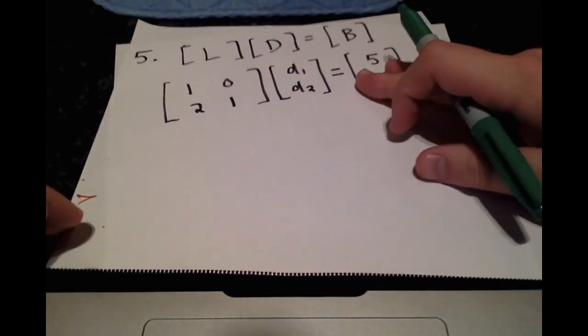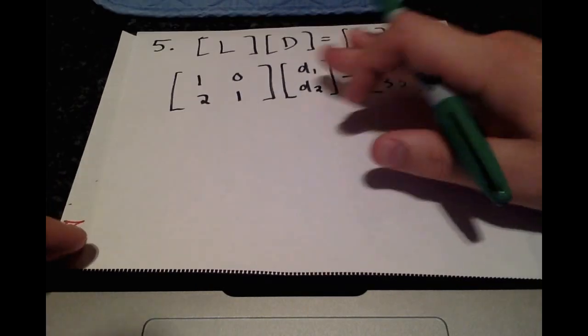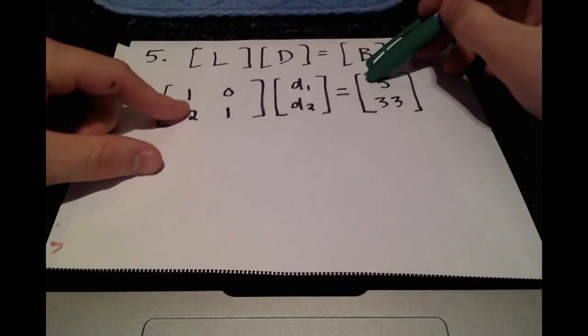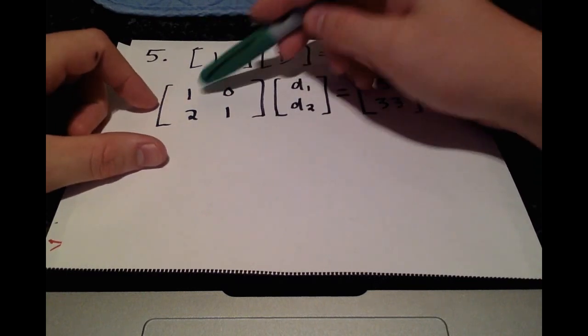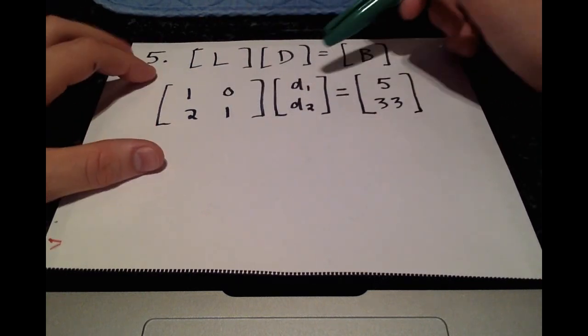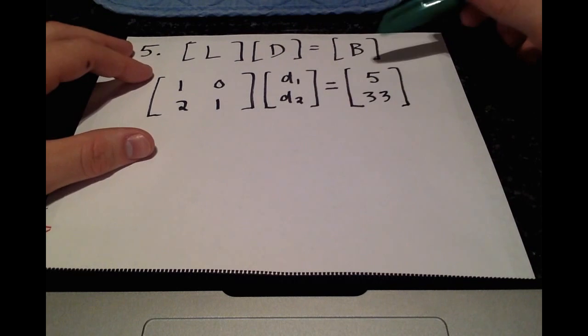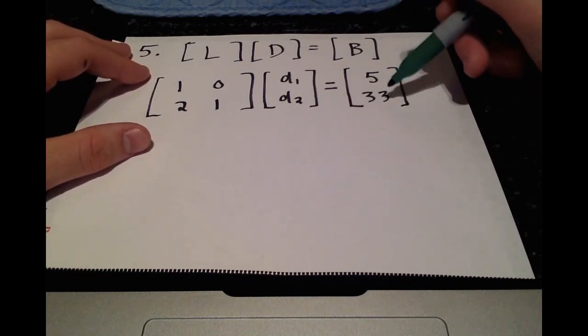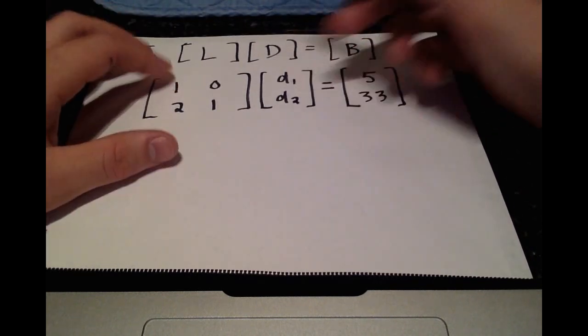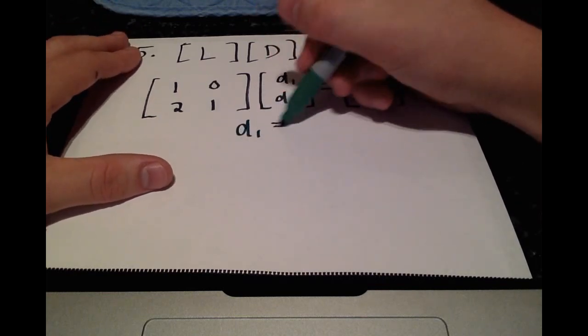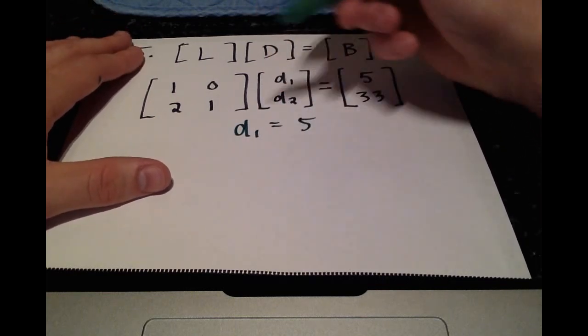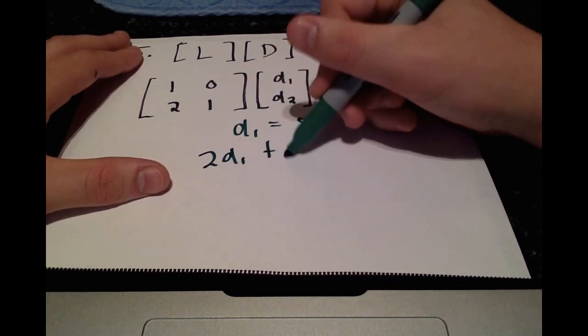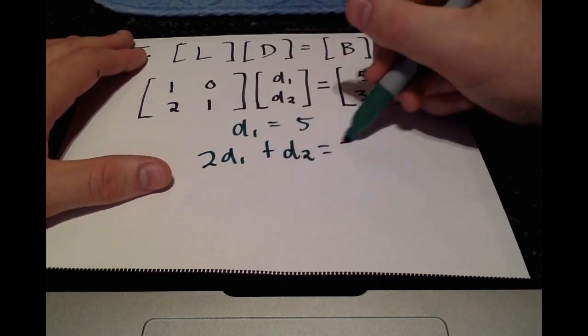Okay, moving on to the next step, we can now do step 5, which says L D equals B. So filling in those values, our L value 1, 0, 2, 1, D, which we want to solve for, D1 and D2, equals B, which is values 5 and 33. So just multiplying this out, you get D1 is equal to 5 and then 2D1 plus D2 is equal to 33.